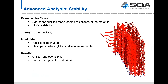The last analysis option I want to highlight is stability. This module allows us to search for buckling modes that would lead to the collapse of a structure, understanding how the structure will truly buckle. Often we use K factors straight out of the steel code, which can be oversimplifications. Stability analysis lets us understand under what load coefficients — those critical load coefficients — the shape will buckle, and then utilize that buckled shape as a true representation of K factors in the steel code check. This gives us a better understanding of how the structure will fail under certain loading conditions.